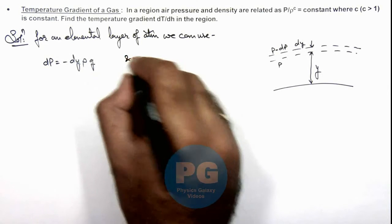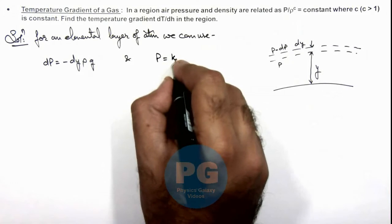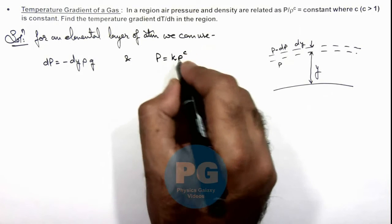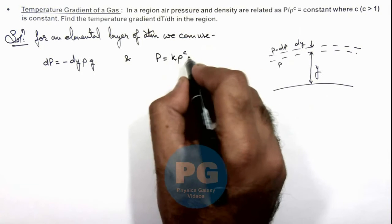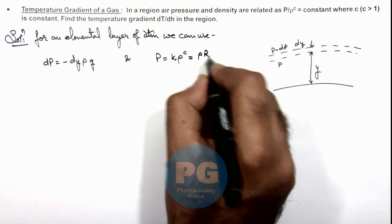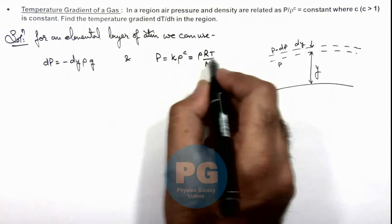And we are already given as p is equal to this is some constant multiplied by ro to power c. And this k ro to power c we can also write as ro r t by em by gas law, pressure is ro r t by em. So from this relation we get the value of temperature of gas in terms of density.